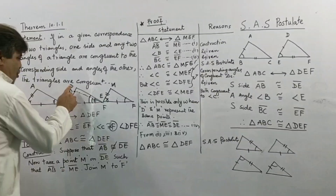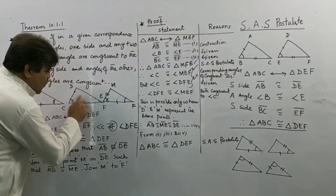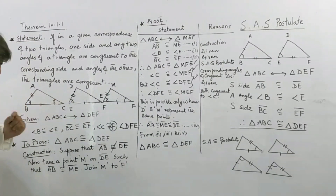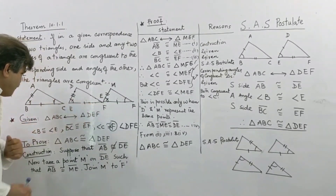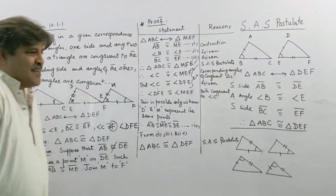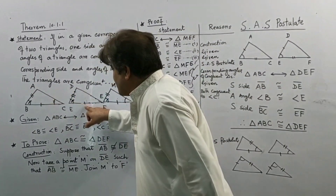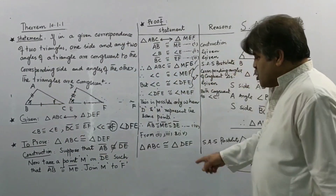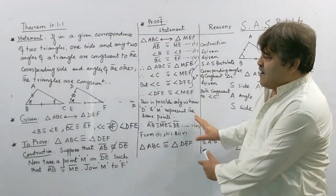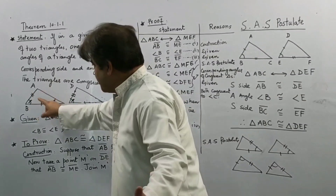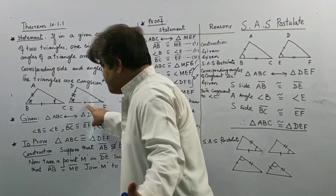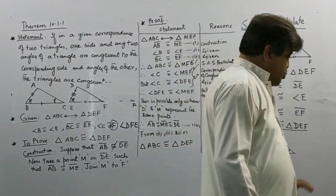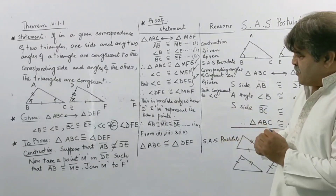So AB is congruent to DE. Now if we remove the construction, what we have is: AB is congruent to DE, BC is congruent to EF, and angle B is congruent to angle E — that is the SAS postulate. So these two triangles ABC and DEF are congruent by SAS. This was the first theorem all about.